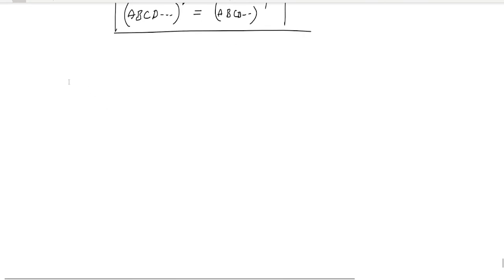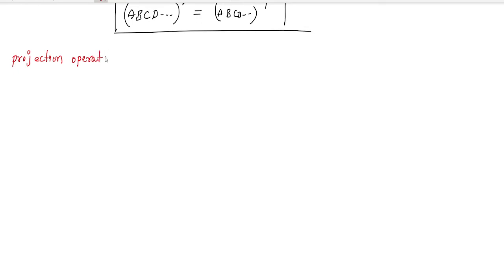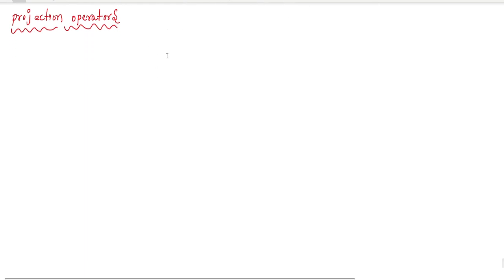Next is the projection operator. An operator P is said to be a projector or projection operator if it is Hermitian and equal to its own square. Then we can call that operator a projection operator.